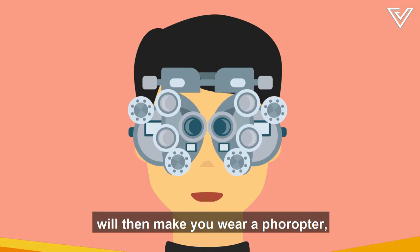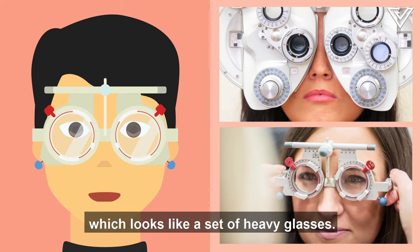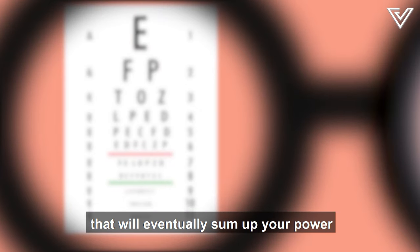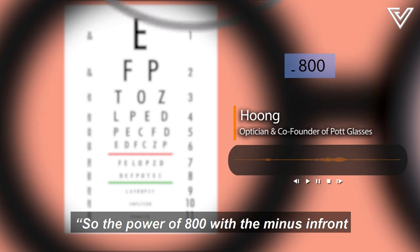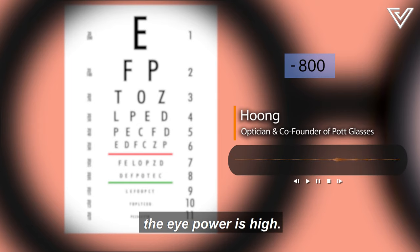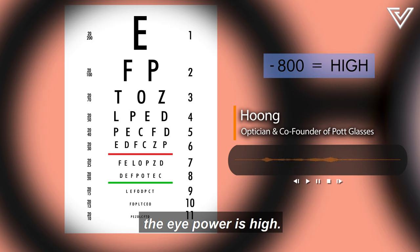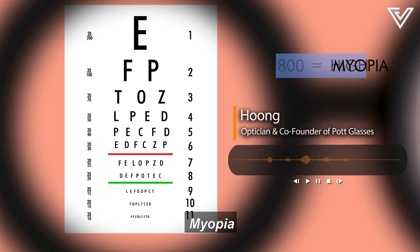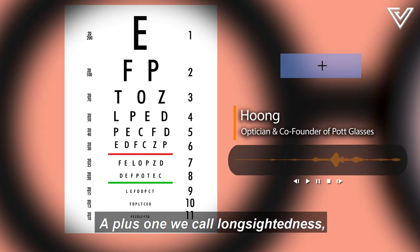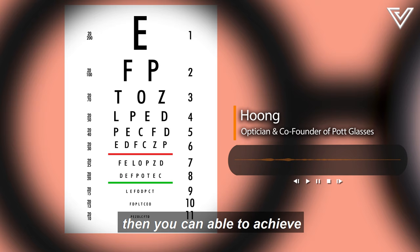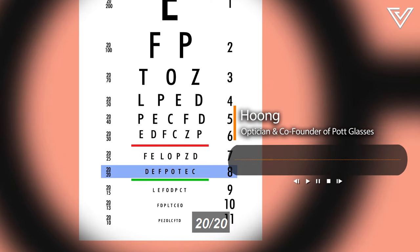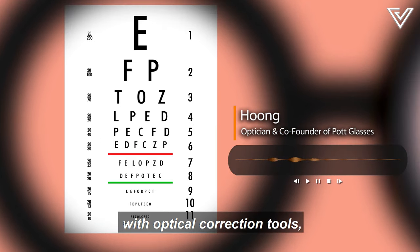The optician will then make you wear a phoropter, which looks like a set of heavy glasses. The phoropter is meant to hold the lenses that will eventually sum up your power for your left and right eye. So the power of 800 with a minus in front, it simply means the eye power is high. A minus one we call short-sightedness myopia, a plus one we call long-sightedness hyperopia. So the objective is always to make sure after we prescribe the glasses, then you can be able to achieve 20-20 with optical correction tools, with glasses.